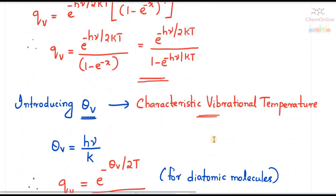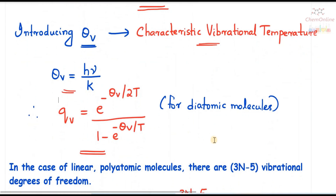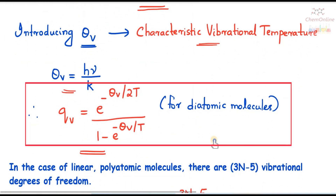Now we introduce the characteristic vibrational temperature θ_v, defined as θ_v = hν/k, where θ_v has dimensions of temperature and is known as the characteristic vibrational temperature. So the vibrational partition function can be rewritten in terms of θ_v as q_v equals e raised to minus θ_v/2T divided by (1 − e raised to minus θ_v/T). This is the vibrational partition function for diatomic molecules.